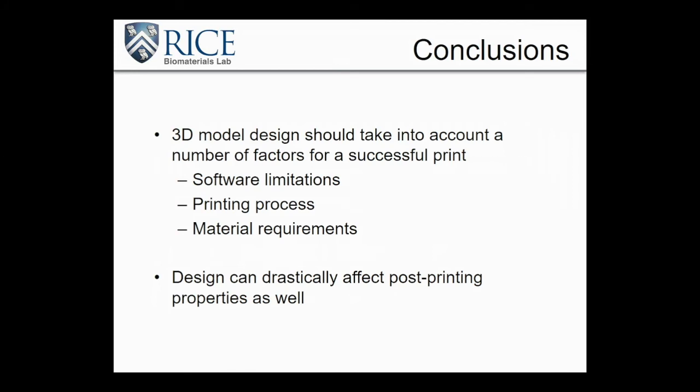You shouldn't limit your investigations to printing your scaffold in one direction and thinking that just changing something like crosslinking is enough to get the mechanical properties you're interested in. 3D model design should be taken into account because many factors affect not only a successful print, but you can modulate the scaffold drastically by incorporating intentional porosity and intentionally orienting your scaffolds differently. I encourage everybody to look into how you can model and design your prints deliberately to achieve the effects you're looking for before you even print something.